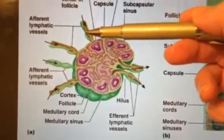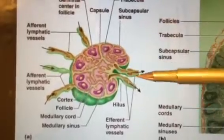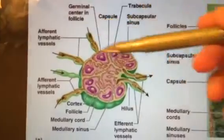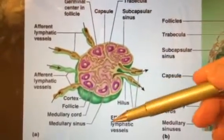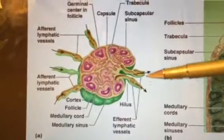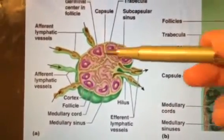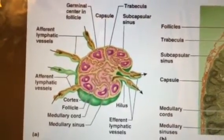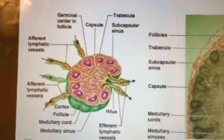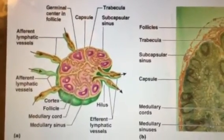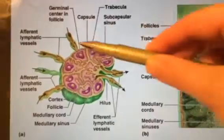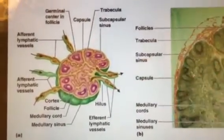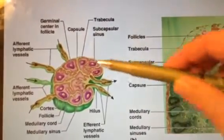Notice there are four vessels coming into the lymph node but only two going out. The ones coming in are called afferent vessels and the two exiting are called efferent — remember 'efferent' equals 'exit.' Why four in but only two out? Think of Walmart: everybody comes in but they get held up at the checkout counters. The lymph node similarly slows things down to filter them.